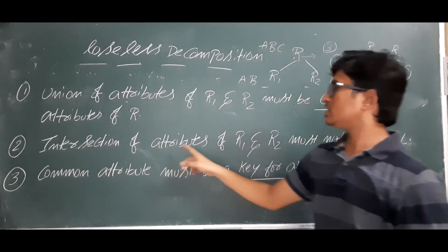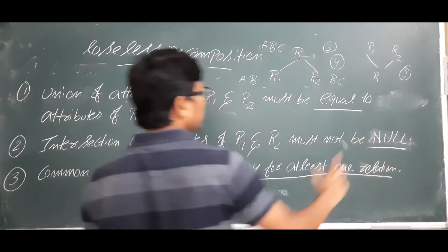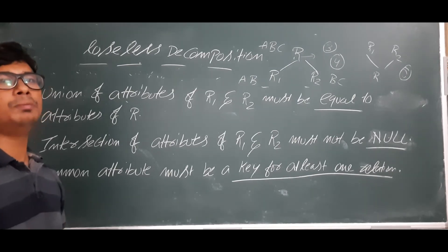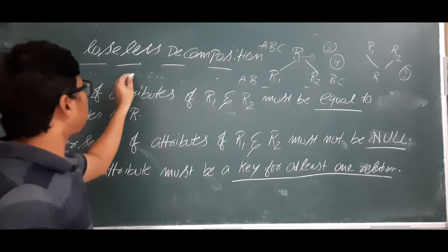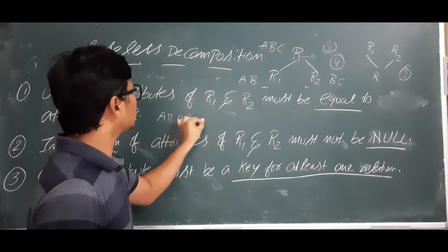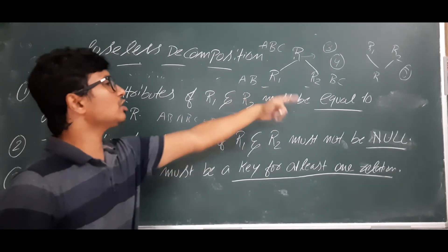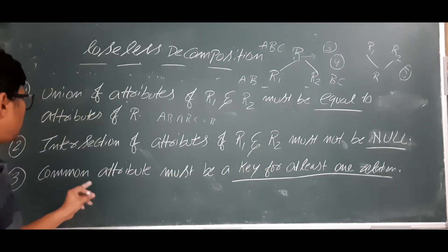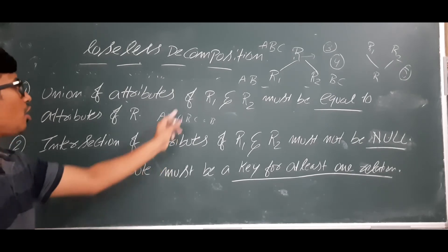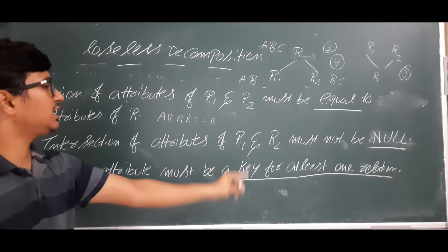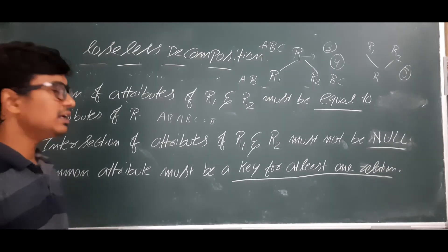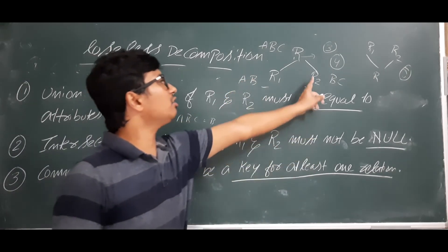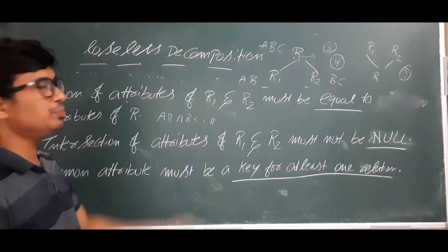Rule 2: Intersection of attributes of R1 and R2 must not be null — meaning there must be a common attribute. Intersection of AB and BC gives B, so B is the common attribute and it is not null — second condition satisfied. Rule 3: The common attribute must be a key for at least one relation. Here B must be a key for either relation R1 or relation R2. Then we can say the decomposition is lossless.